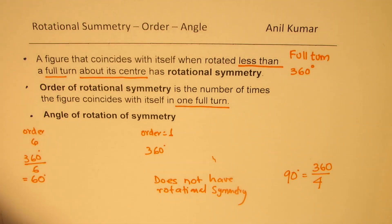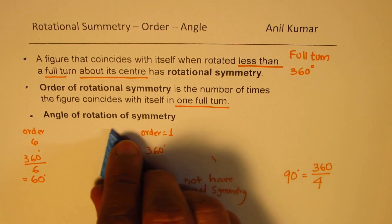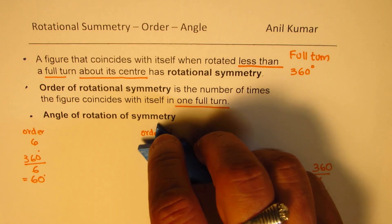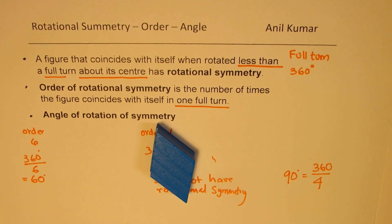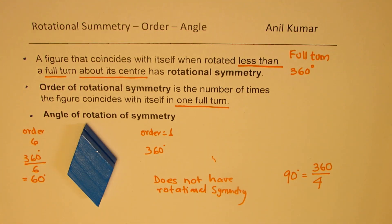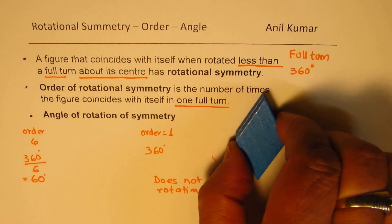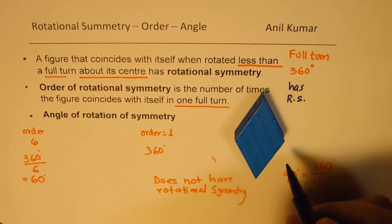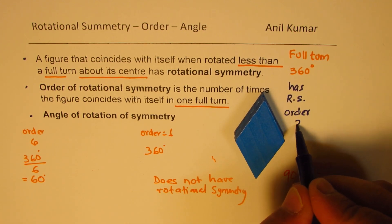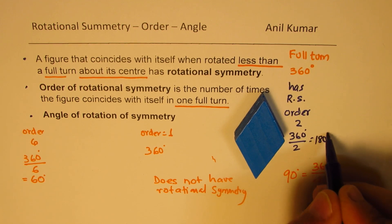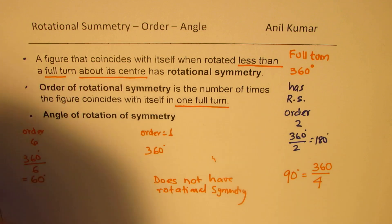Now let's take an example — a diamond shape. Does it have rotational symmetry? If I rotate it, it does match once before completing a full circle. So it does have rotational symmetry. It matches once within the full turn and a second time when you complete the turn. So the order is 2, and the angle of rotation is 360 divided by 2, which is 180 degrees.